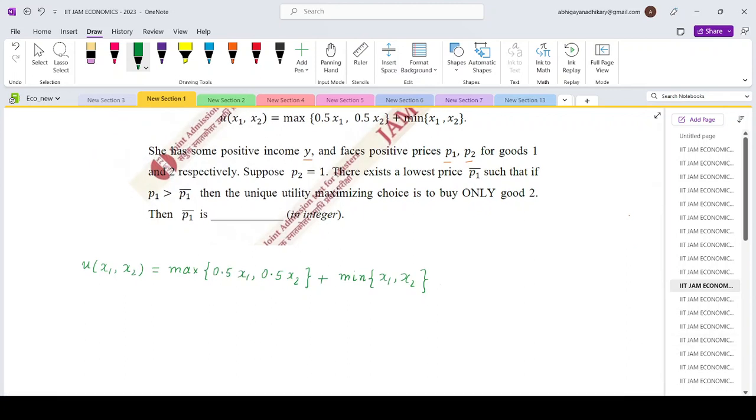There are two goods, good 1 and good 2. Now if you look at this structure carefully for the max part first.